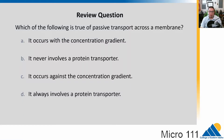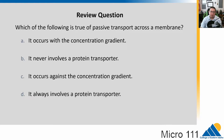Before we get started with 5.3, let's do a little review question. Which of the following is true of passive transport across a membrane? Is it A, it occurs with the concentration gradient; B, it never involves a protein transporter; C, it occurs against the concentration gradient; or D, it always involves a protein transporter? Go ahead and pause the video and think about that one.